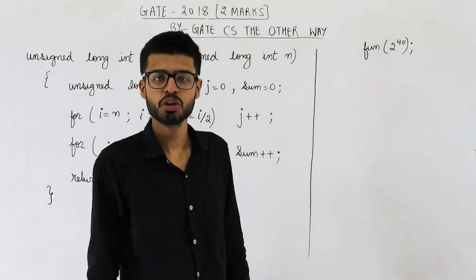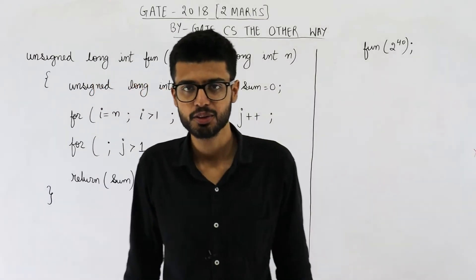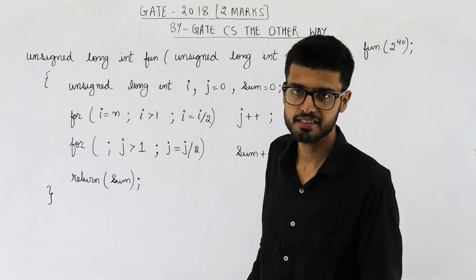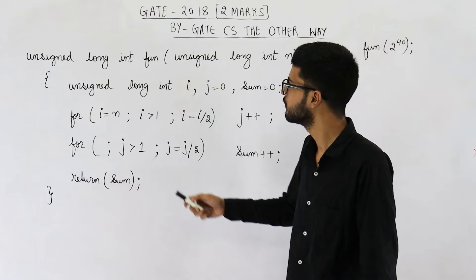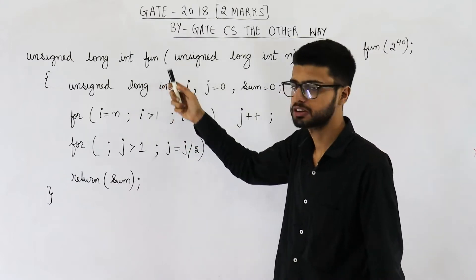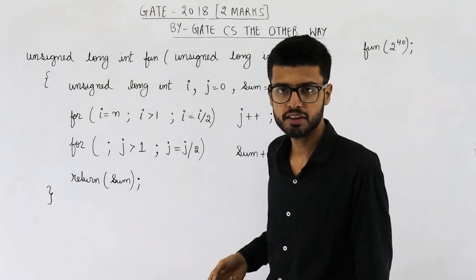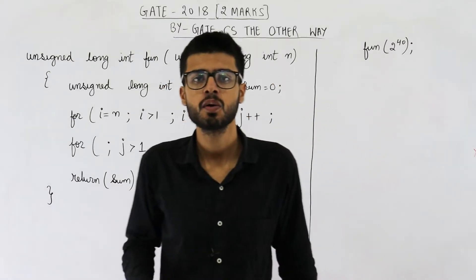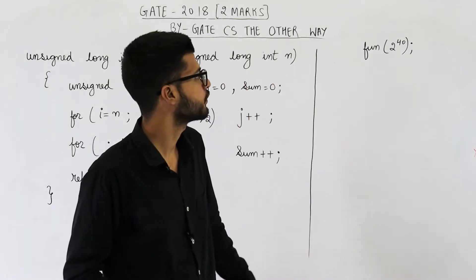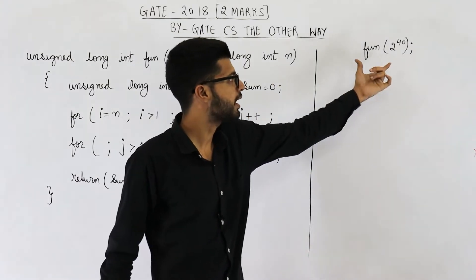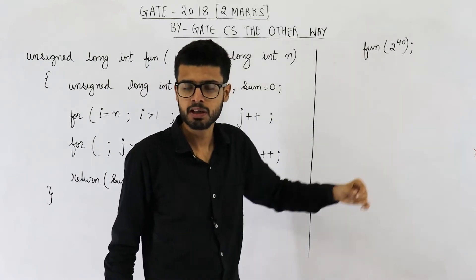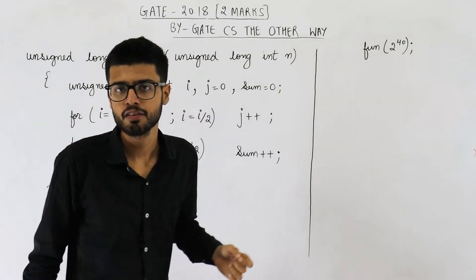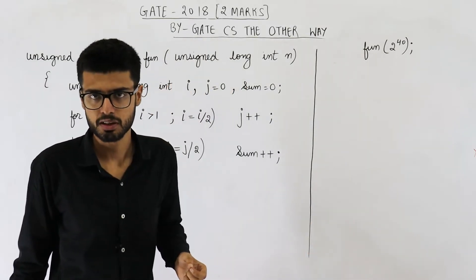Hello people, welcome back. This question is from the GATE 2018 exam. It is for two marks. They have given you this function. The question is: if we call this function fun and pass 2 raised to the power 40 as the parameter, what is the value that will be returned?